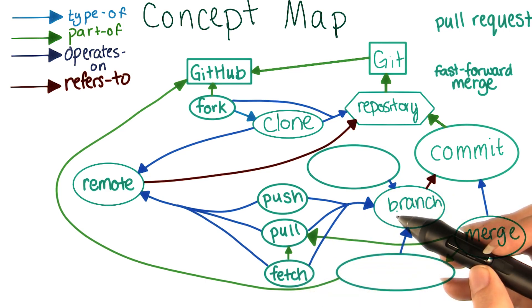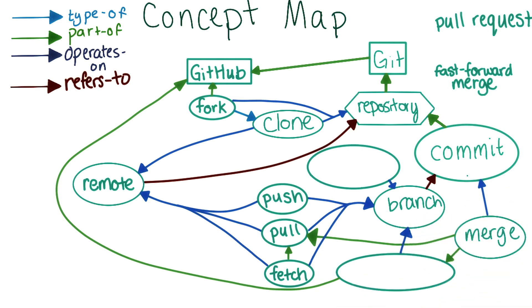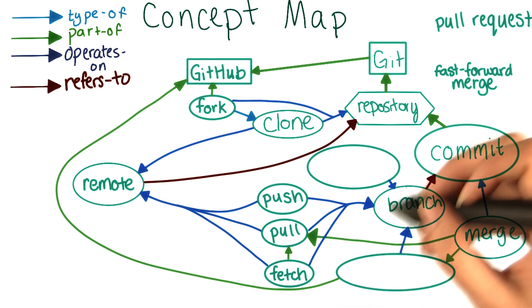The connection to branch is a little less clear. You can definitely fetch a particular branch. When you fetch, the branch doesn't necessarily get updated. But remember that we have references to the remote versions of our branches. And those are the things that get updated. So it does operate on branches as well.